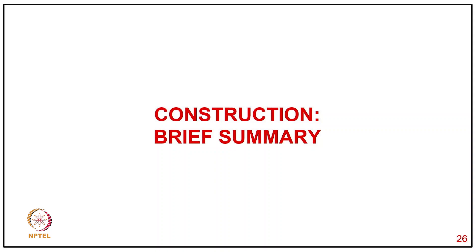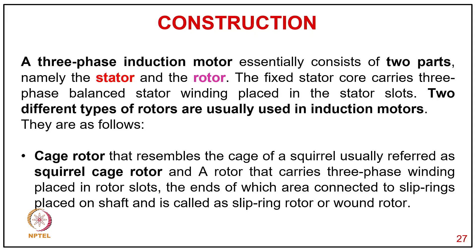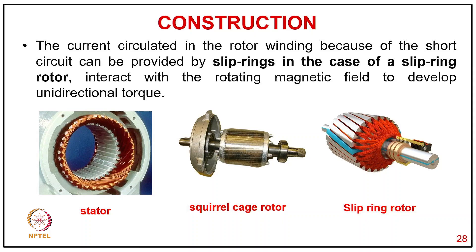A three-phase induction motor essentially consists of two parts: the stator and the rotor. The fixed stator core carries three-phase balanced stator windings placed in stator slots. Two different types of rotor are used: the cage rotor, which resembles a squirrel cage and is usually referred to as the squirrel cage rotor, and a wound rotor that carries three-phase winding placed in rotor slots with ends connected to slip rings on the shaft.